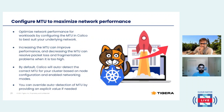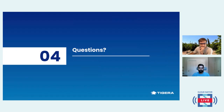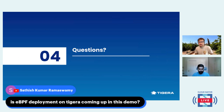You can configure MTU to maximize network performance. Based on your underlying network, you can either decrease or increase your MTU for optimal performance, but by default Calico can auto-detect and use the correct MTU for your cluster based on node configurations. With that, it brings me to the end of the presentation. There was a question asking about eBPF deployments — whether I have a demo or good resources. Unfortunately, I'm not going to demo that — my technical counterpart would have done that if he or she was available.